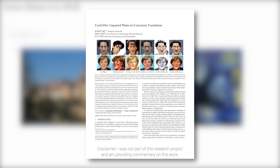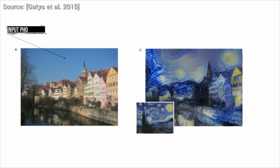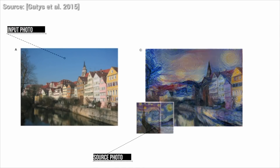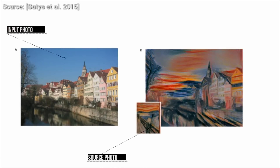Dear Fellow Scholars, this is Two Minute Papers with Károly Zsolnai-Fehér. Style transfer is an interesting problem in machine learning research where we have two input images, one for content and one for style, and the output is our content image reimagined with this new style.